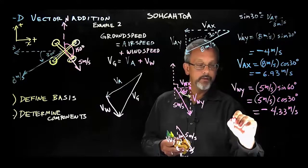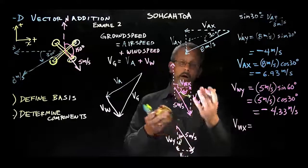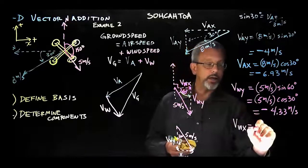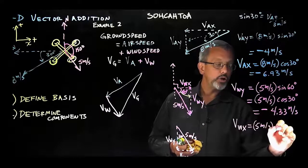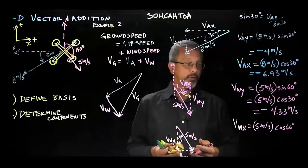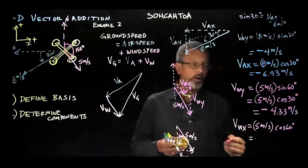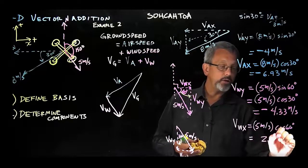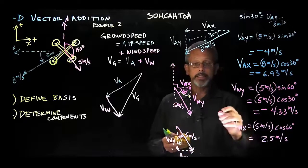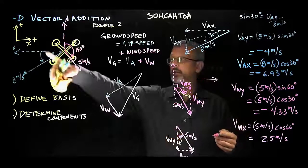For VWx, using cosine of 60 degrees — or equivalently sine of 30 degrees — times 5 meters per second: that's one half times 5, giving 2.5 meters per second. Checking direction: this component points to the right or east, which is positive. So VWx = +2.5 meters per second. We do have one positive value here, which will be important for our next step.